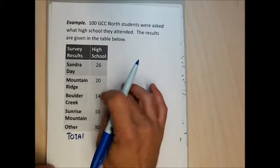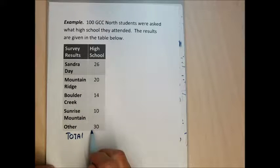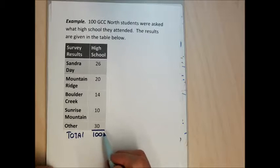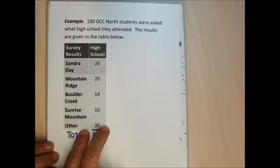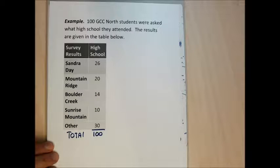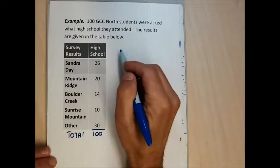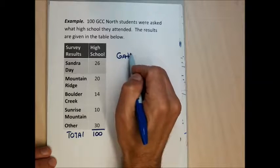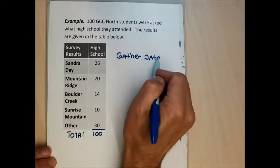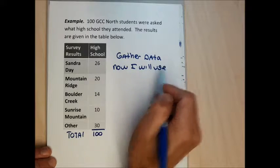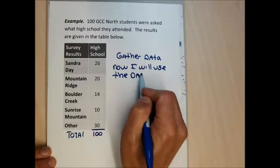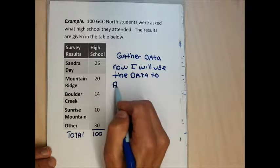Of the 100 students, 26 went to Sandra Day, 20 to Mountain Ridge, 14 to Boulder Creek, 10 to Sunrise Mountain, and 30 to some other high school — Centennial, Thunderbird, Greenway, Deer Valley, or other northwest schools — lumped into a big other category. This is the data gathered, and now I'm going to use it to answer probability questions.